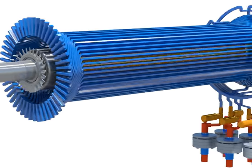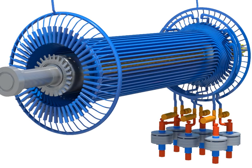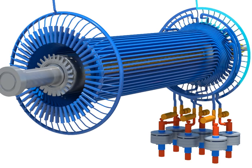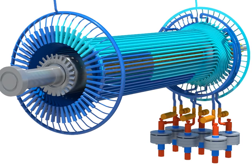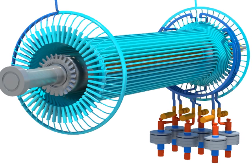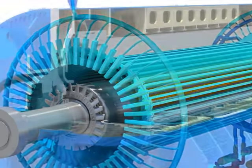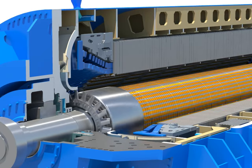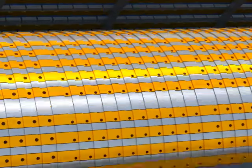For generator cooling, the stator winding adopts a cooling method using water and the rotor adopts a hydrogen cooling method. Circulation of hydrogen is done by the axial flow fan attached to the rotor shaft inside the machine.